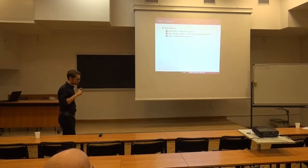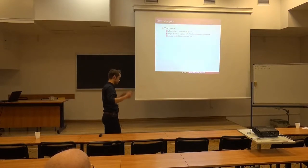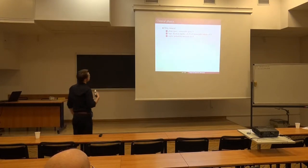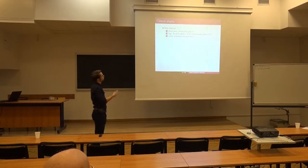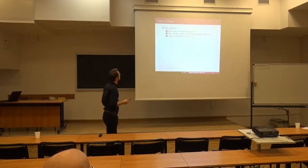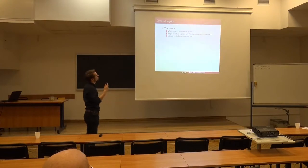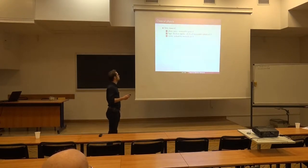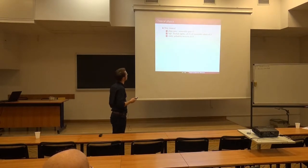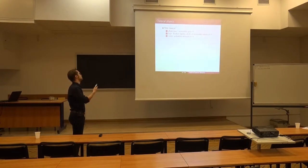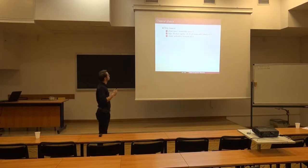We want to start by looking at the basic ingredients of a physical system in classical physics. The ingredients we would consider are the phase space — the word 'space' is important, it's something geometric. In the most classical approach, it should be a measurable space. The logic of the system would be the algebra of measurable subsets of X, or some Boolean algebra of subsets of X. States would be probability measures on the phase space.